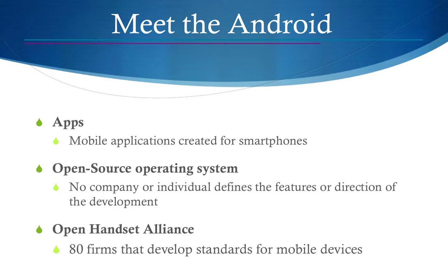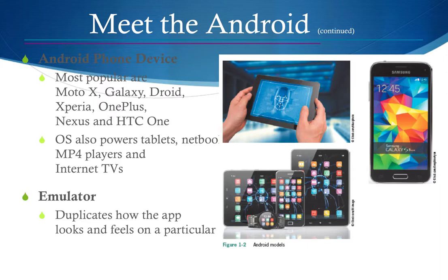Apps are mobile applications created for smartphones running an open source operating system — no company or individual defines the features or direction of development. The Open Handset Alliance is an example. Popular Android devices include the Moto X, Galaxy, Droid, and OnePlus. You can emulate apps directly to a physical tablet or on-screen using the emulator, and there are many tools and IDEs available for that.